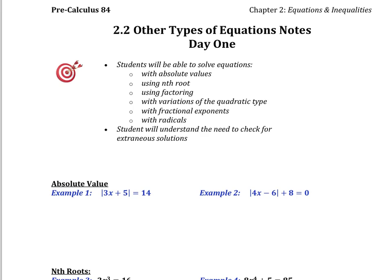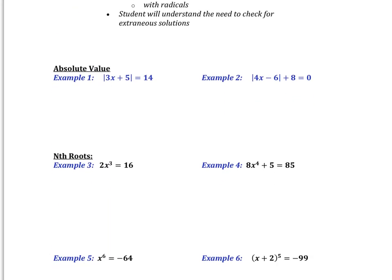On our very first one, we have absolute value. The big thing that you need to know with absolute value is that there could be 2, 1, or 0 solutions. The absolute value of 14 is 14, and the absolute value of negative 14 is also 14. So the piece inside of our absolute value could equal either 14 or negative 14, and when we take the absolute value of it, we get 14 as a result.